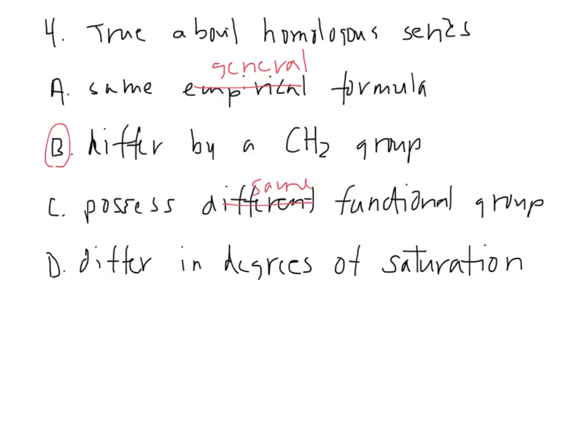Different families have different functional groups. And the differing degrees of saturation, remember this is the number of single versus multiple bonds. And no, they're not going to differ in their degree of saturation. They're going to be the same, because the whole idea with homologous series is these are families, so they're going to have a lot in common. So B would be the only true statement.